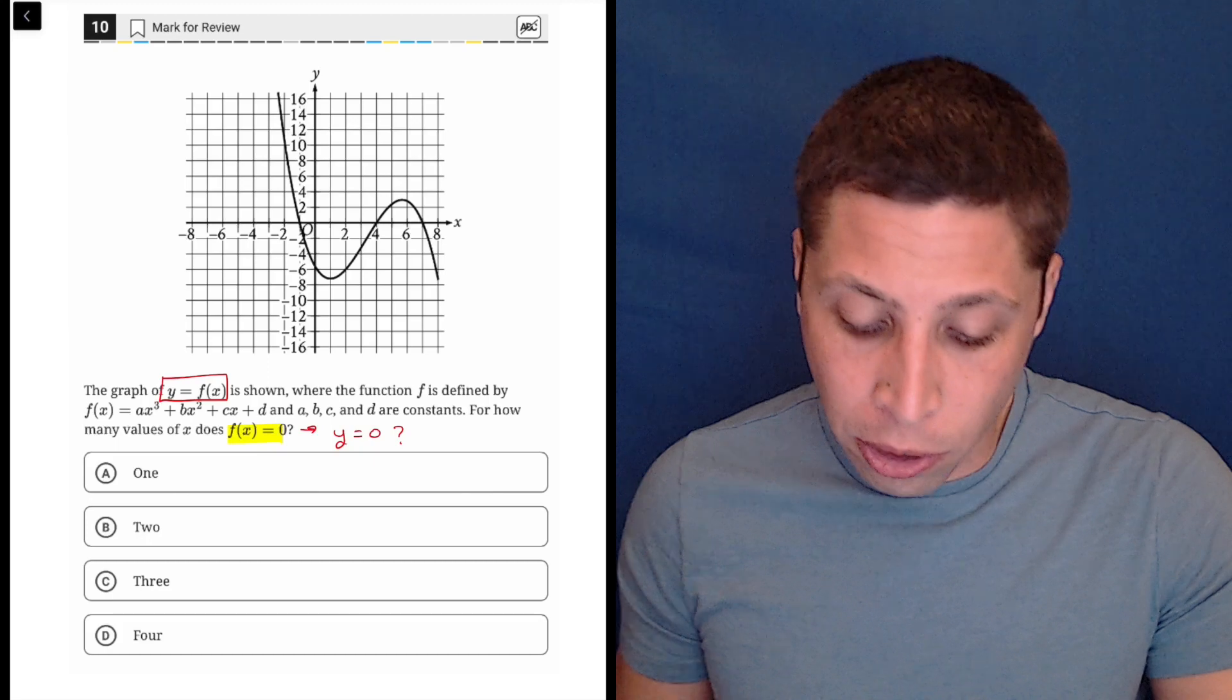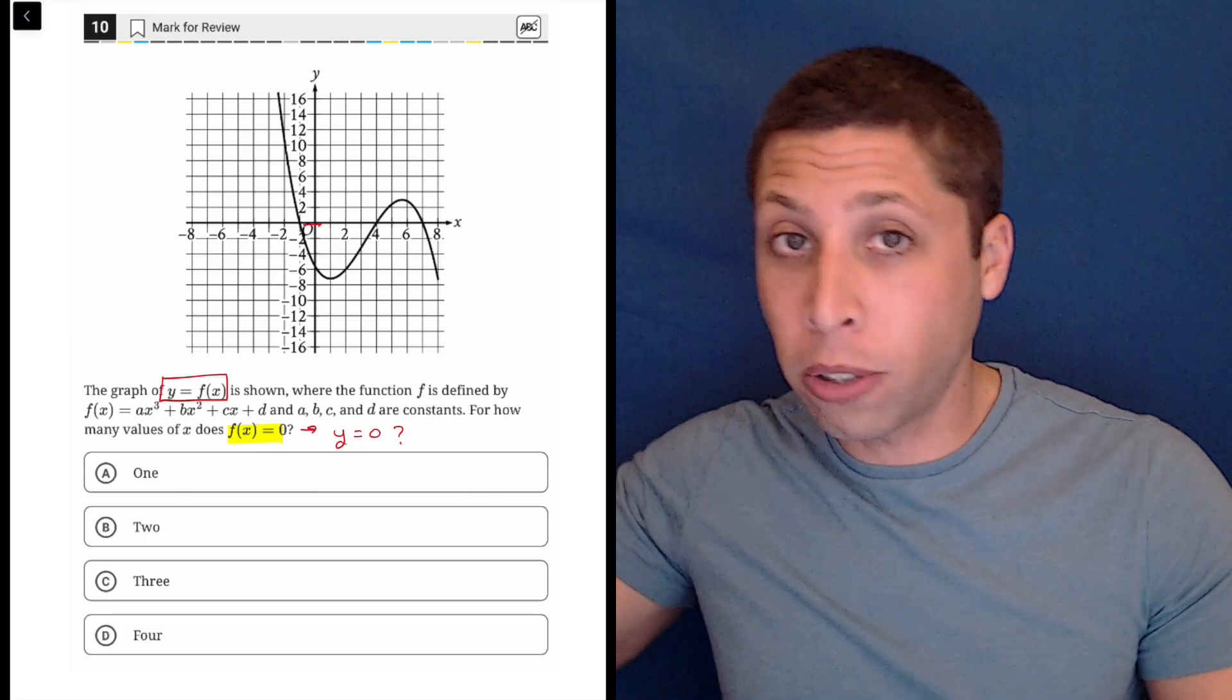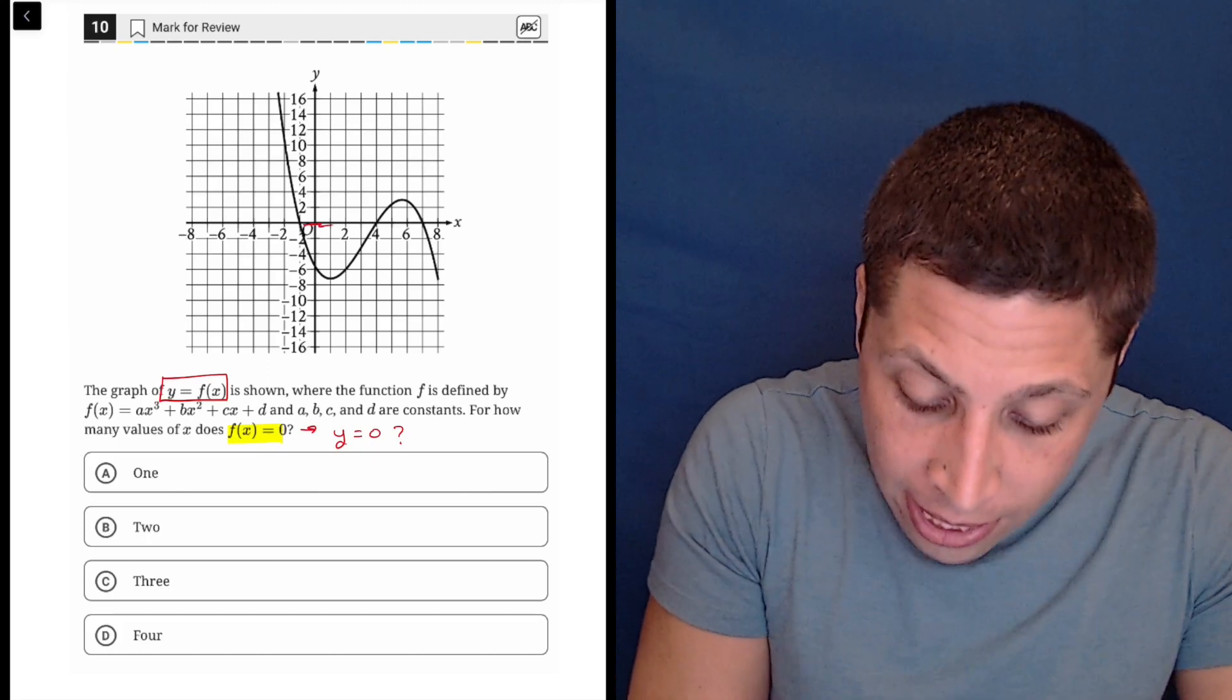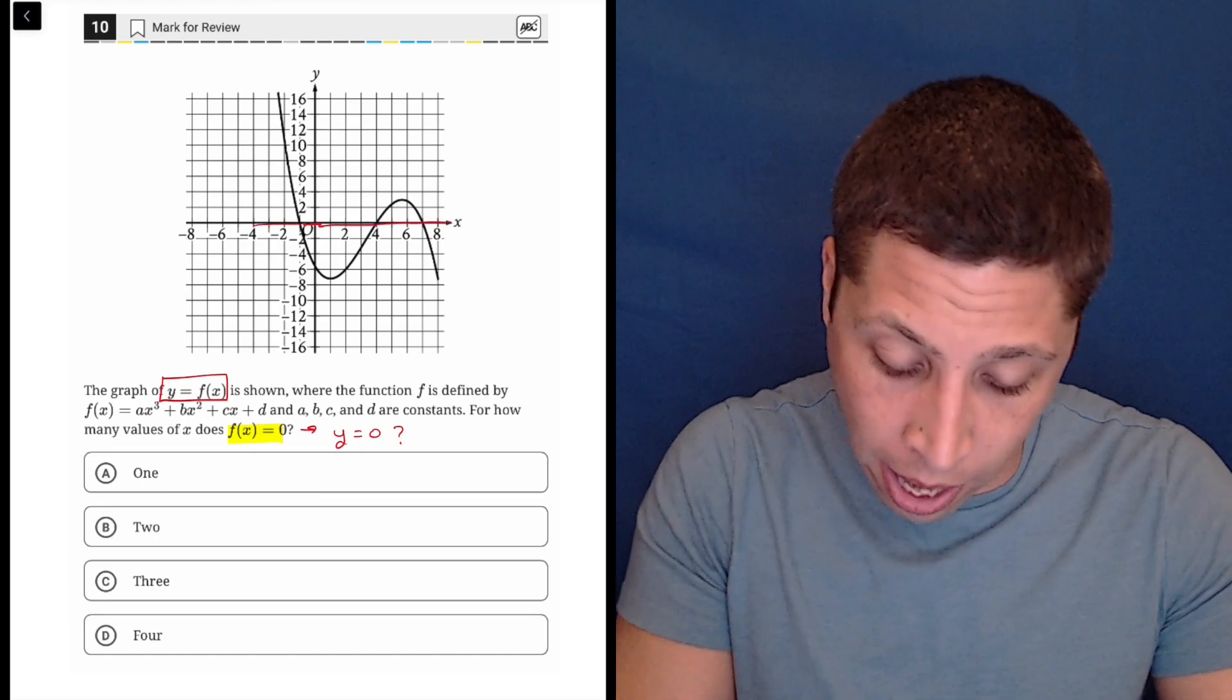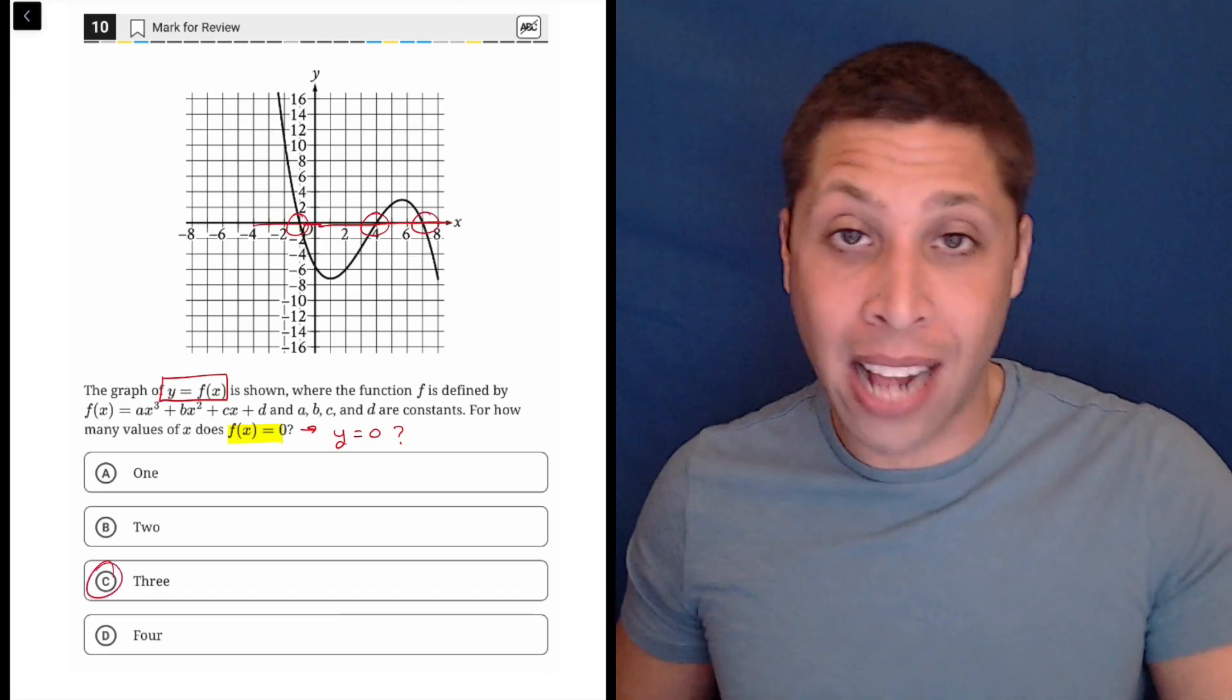So go to 0 on your y axis, right? It's right here. And then just draw a horizontal line and see how many times does our graph cross that horizontal line. Once, twice, three times. That's it.